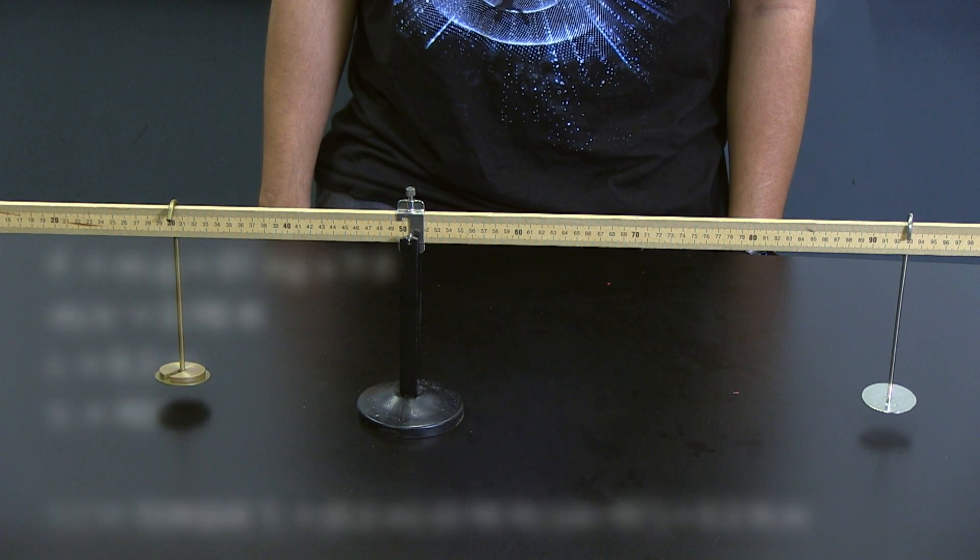The force due to the 100 gram mass is its mass times gravity which is 0.98 Newton. The distance from the pivot is 20 centimeters or 0.2 meters. Angle between the force and the lever arm is 90 degrees. So the total counterclockwise torque is 0.196 newton meter or 0.20 newton meter up to two significant places.